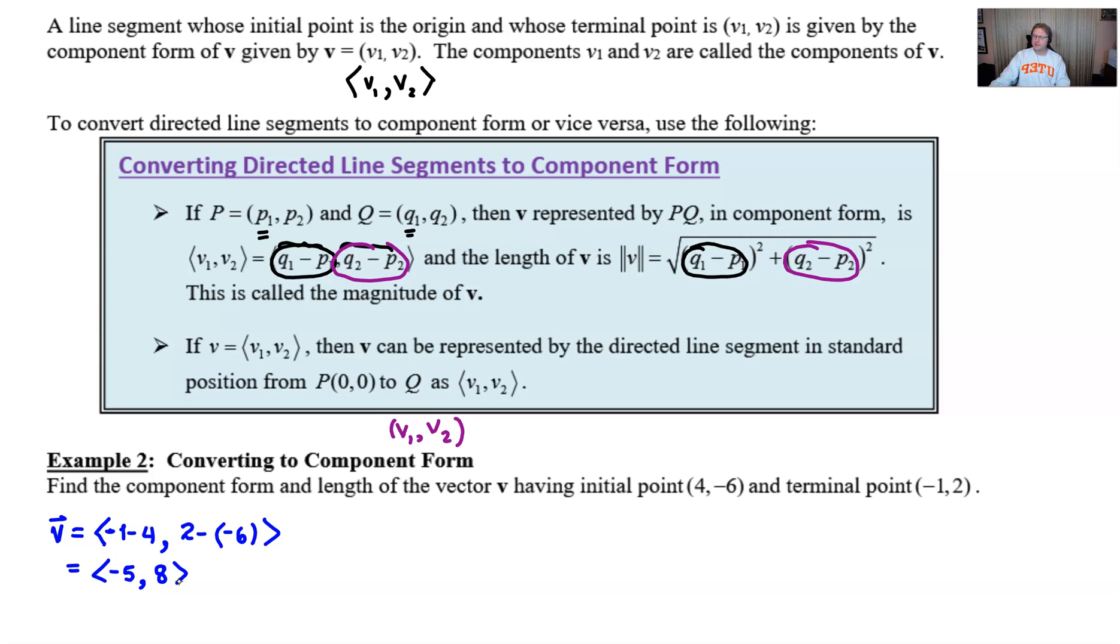Now if you're sitting there thinking well what about the i and the j form, maybe you've taken a physics class and you've used that or maybe your trig class used i and j. Sometimes we call that linear combination form, we're going to talk about that. It's a perfectly viable usage of representing vectors, you could even do that on the AP Calculus exam you don't have to but that's going to come up in a later video.